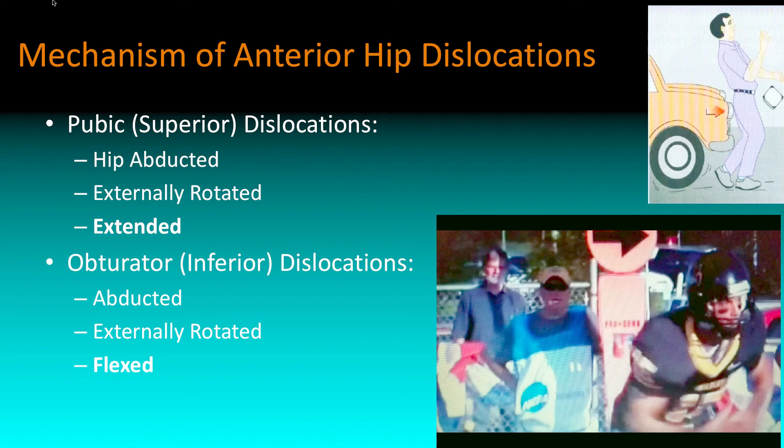Anterior hip dislocations are a little bit different. Your hip is abducted — it's a little bit out — and you may be externally rotated. Between the two different types, it's superior versus inferior depending on whether you're extended or flexed at the time of the injury. This can sometimes happen in football injuries as well.